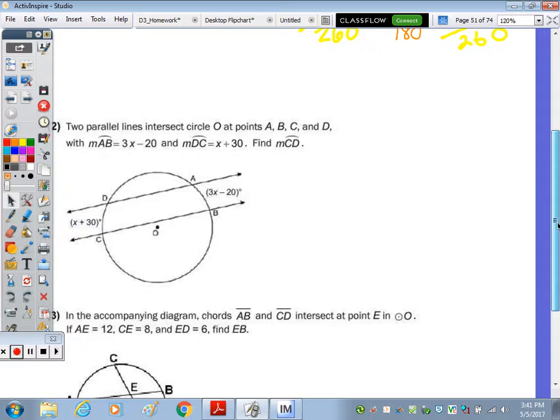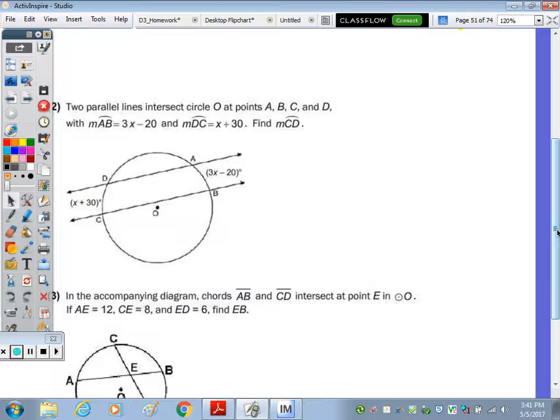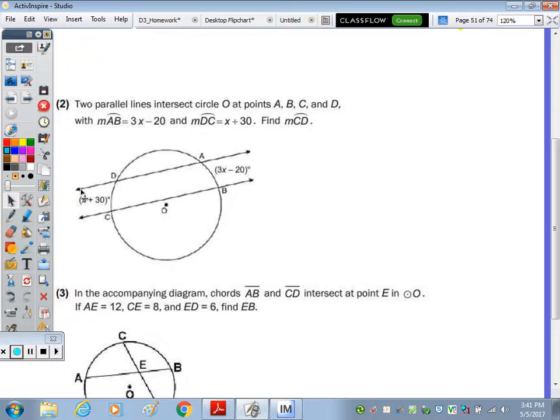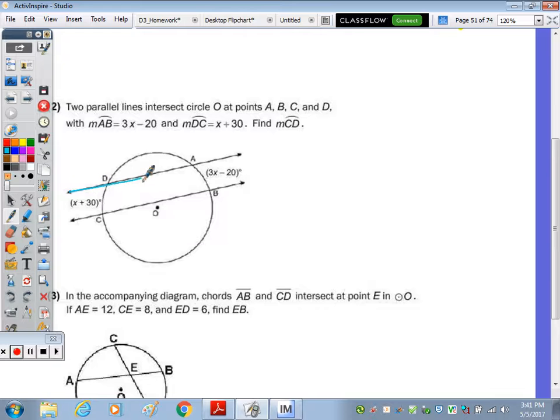Question number two, it says two parallel lines intersect circle O at points A, B, C, and D. So this line here is parallel to this line right here. So that means they're the same distance apart, making the arcs that are intercepted or in between these parallel lines congruent. So as the measure of arc AB is given and DC is given, find the measure of arc CD. Well, since the arcs are congruent, and to find CD we need to know X,